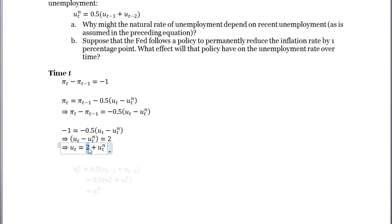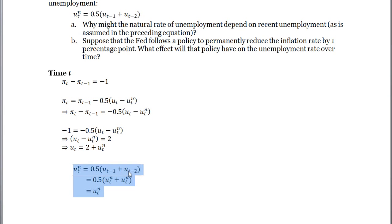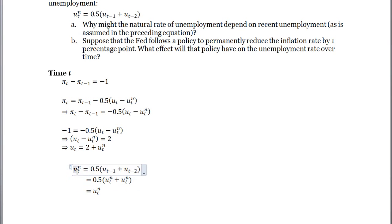There's a big caveat: the natural rate of unemployment also evolves through time. By assumption, for all periods before time T, the unemployment rate equaled the initial natural rate. So the natural rate at time T equals that initial value. This means the Fed needs to drive unemployment up to the initial natural rate plus two percentage points — a pretty typical story of having to raise unemployment to reduce inflation.